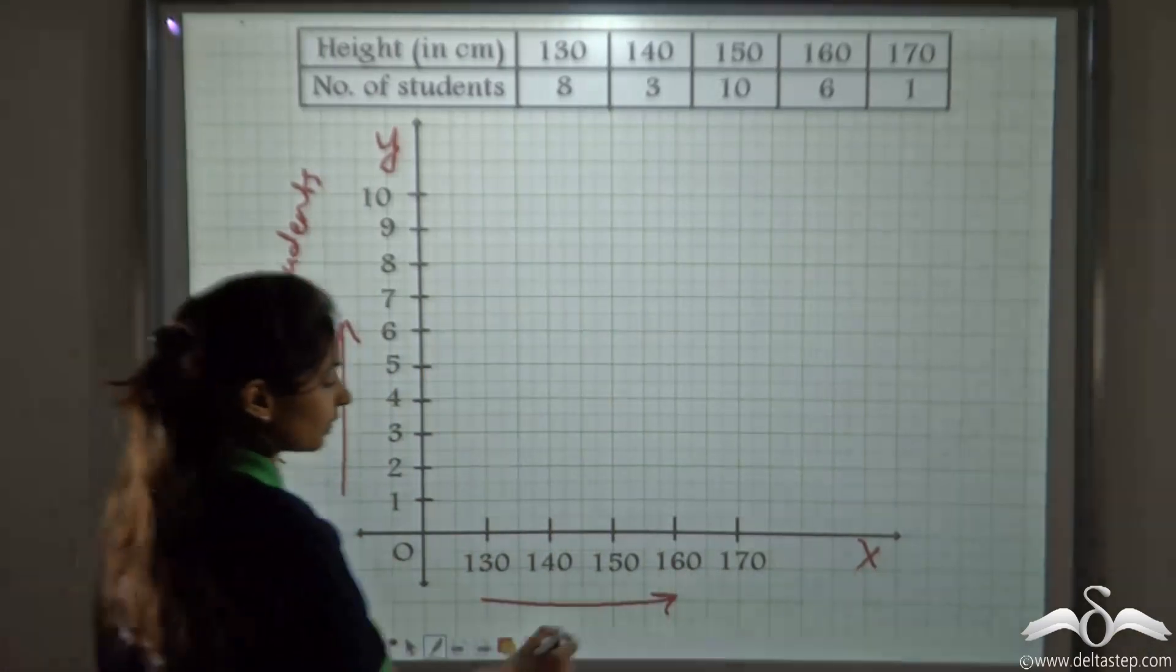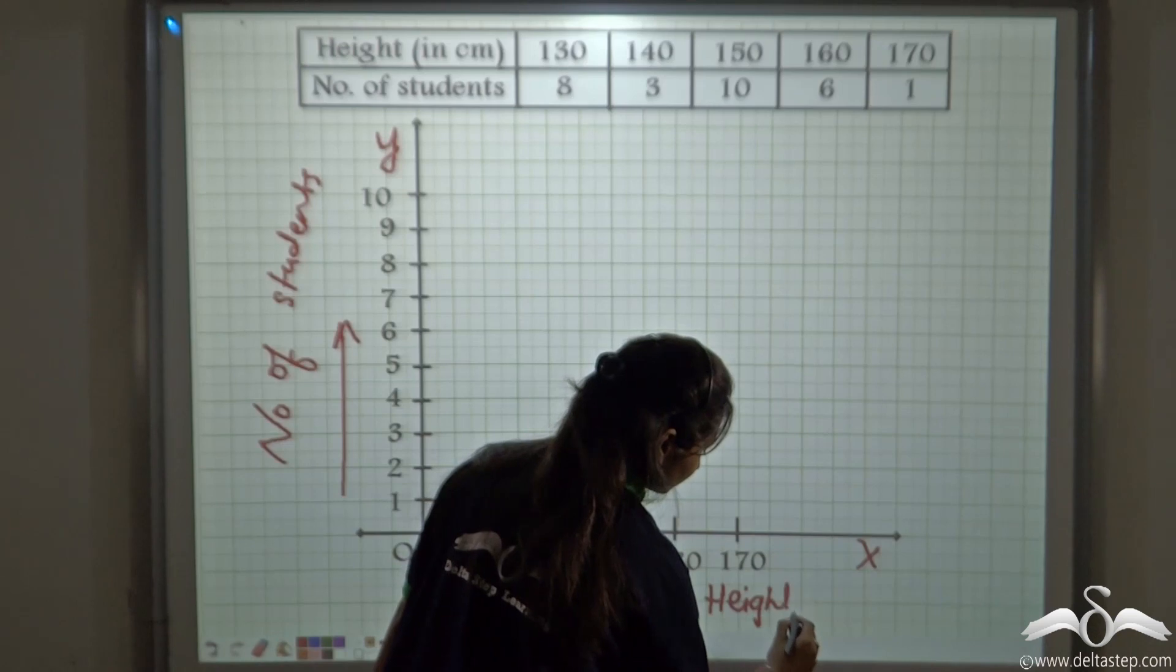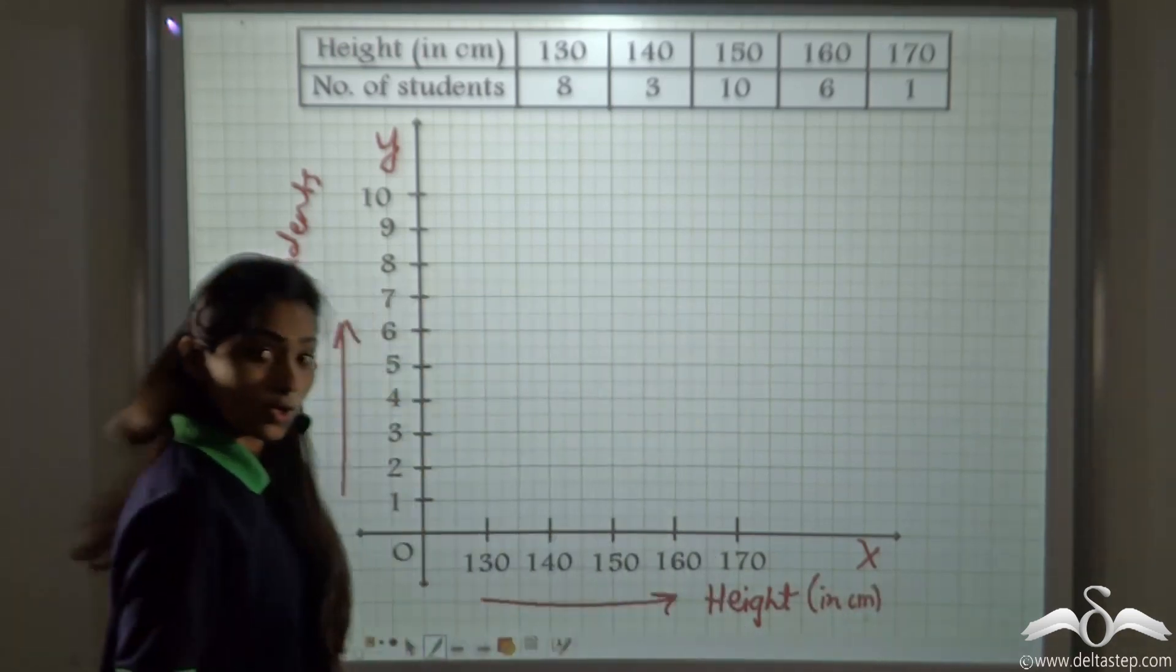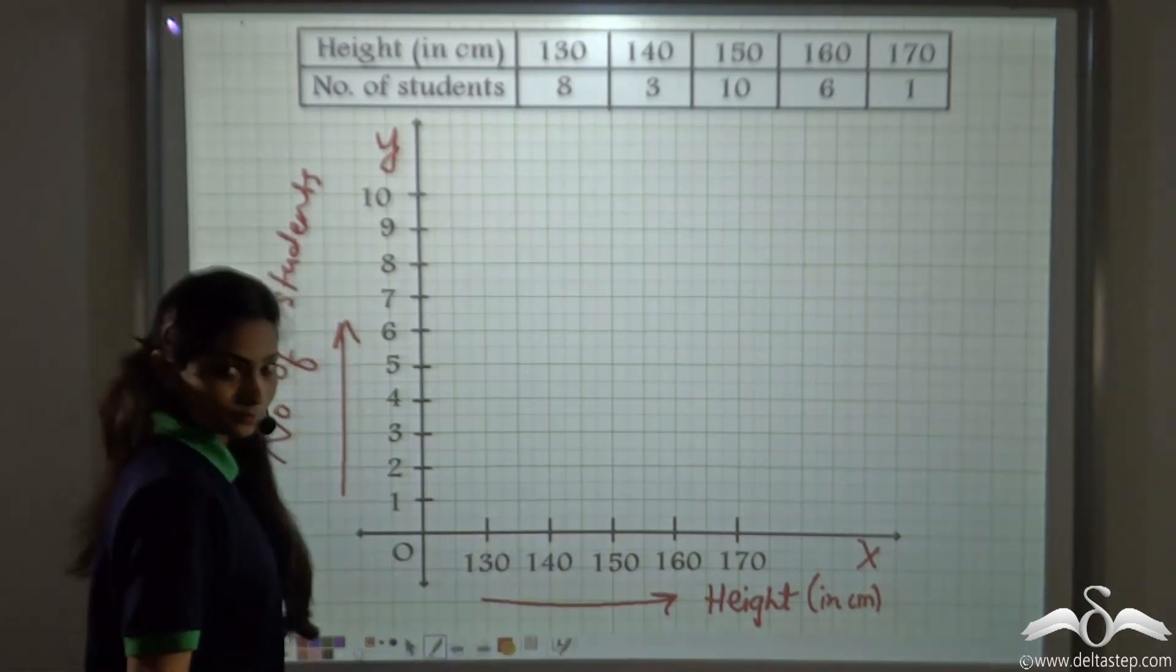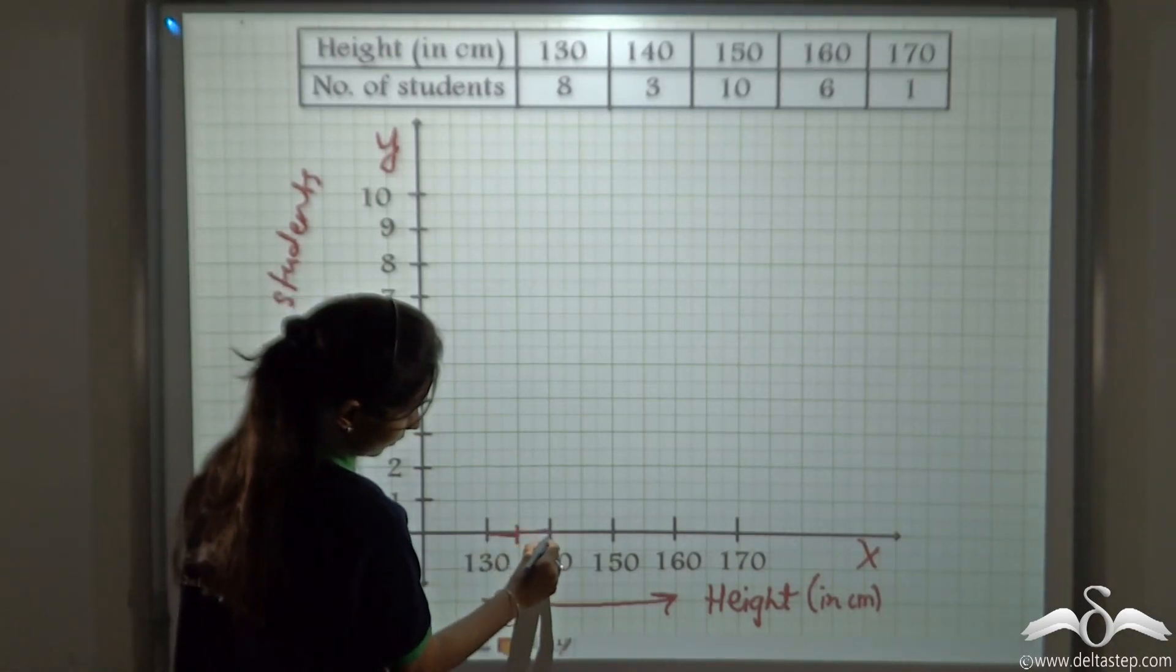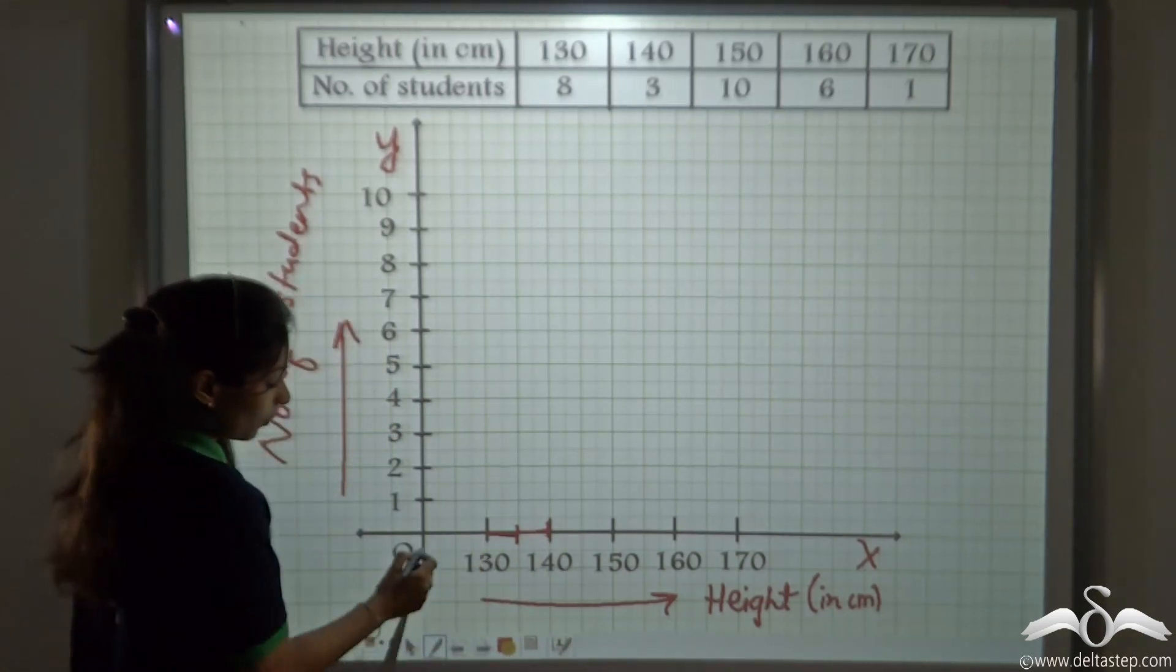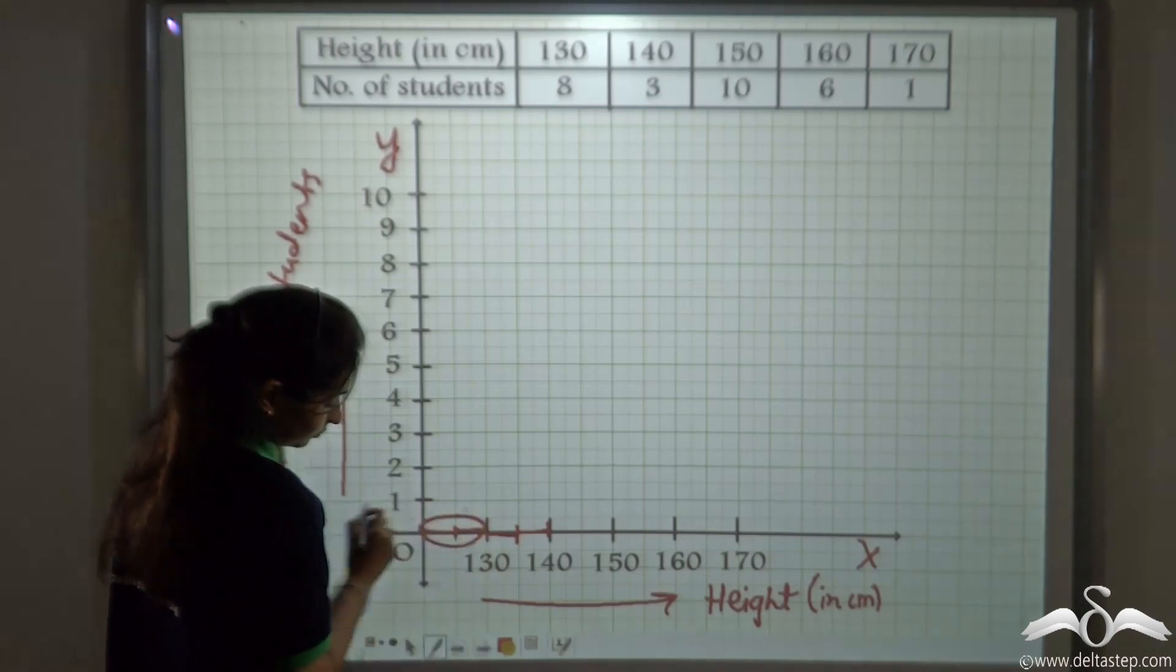This is height given in centimetre. Now notice something, is this scale equidistant here? What is the scale here? You can see that 2 centimetre represents 10 centimetre in height. Now what about this?